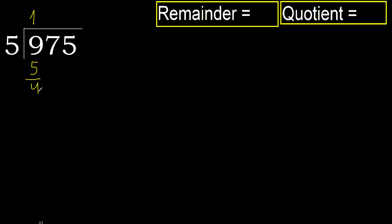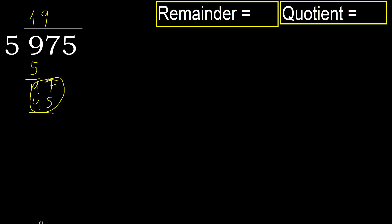Subtract. Next, 47. 5 multiplied by 9 is 45. It is not greater. Subtract: 47 minus 45 is 2.